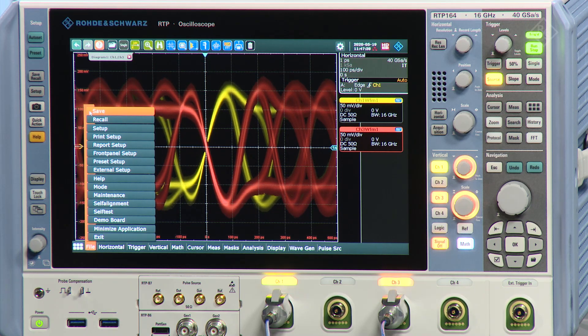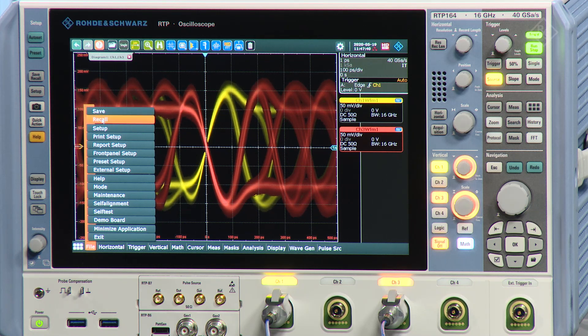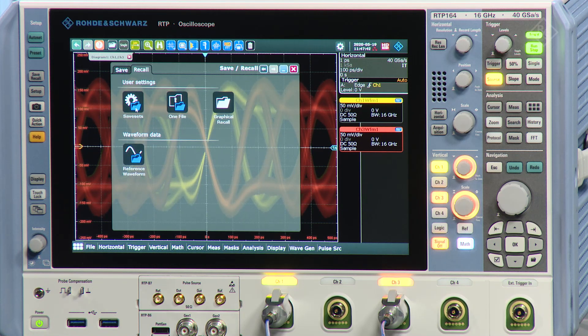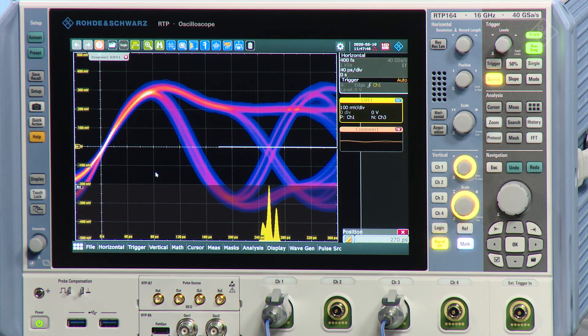So I prepared already something which I will recall to make that easier. And this is my recall from the setting before. We can see color graded the differential channel already. The important part is the RTP is able to create the differential channel in hardware at speed.